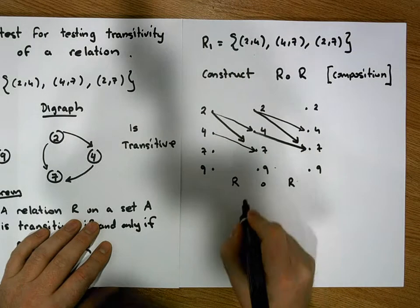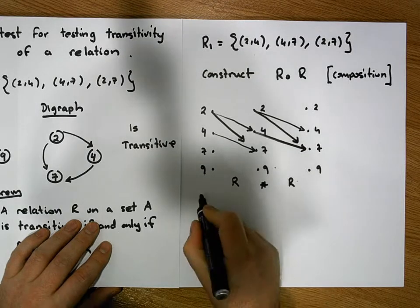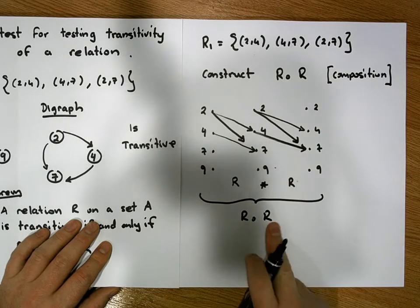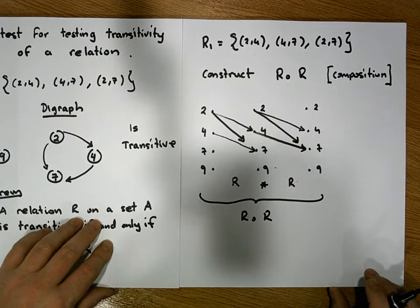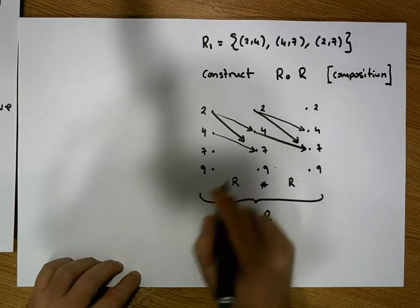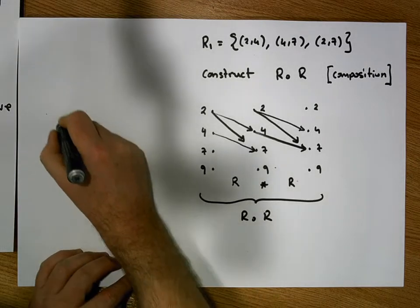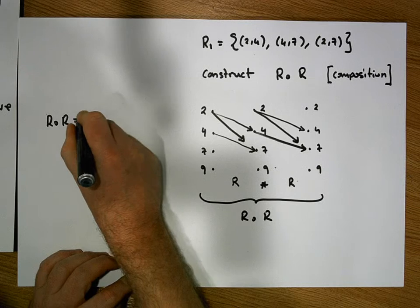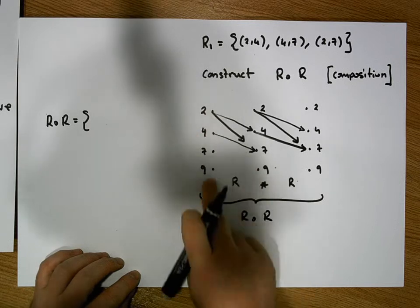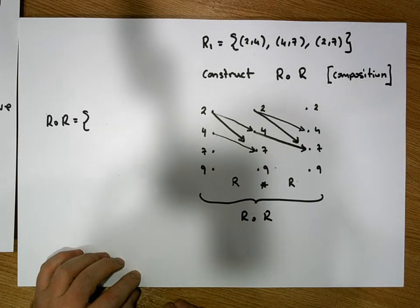What we have done here represents the relation R after R, where R is this relation and we've composed it with itself. Now let's construct that relation as a set. R after R is equal to the set containing all ordered pairs, where I have a source here and a destination — in other words, all the paths that go directly through.